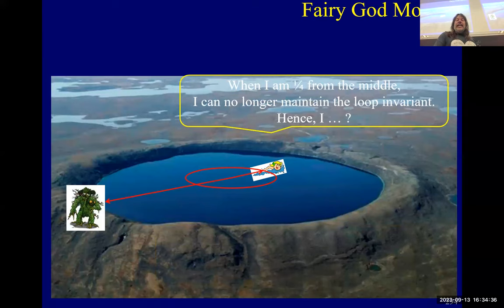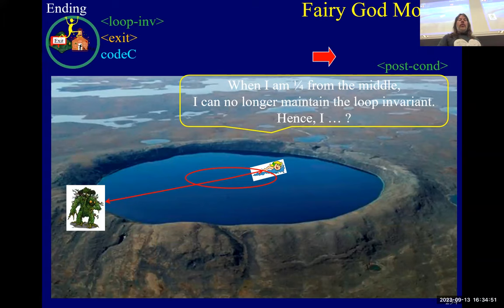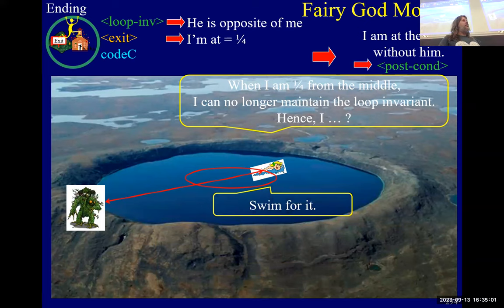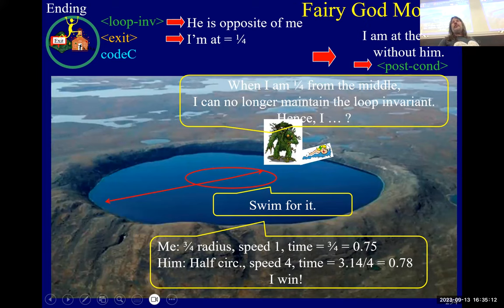When I'm at the quarter point, what do I do? You swim for it. We have the loop invariant — the monster is opposite me — and the exit condition is that I'm at the quarter mark. To get the postcondition, I just swim. You do the math: you're only going three quarters of the radius to shore, so it takes you less time than the monster needs to run around. It's a good puzzle.